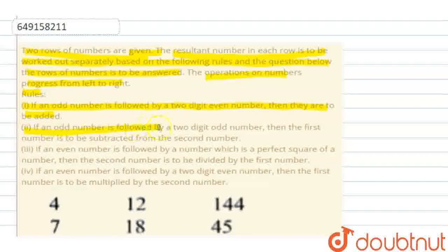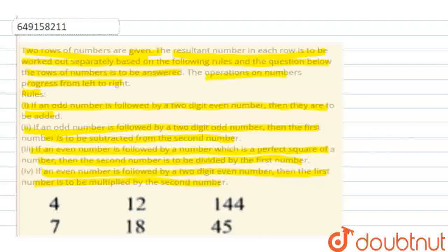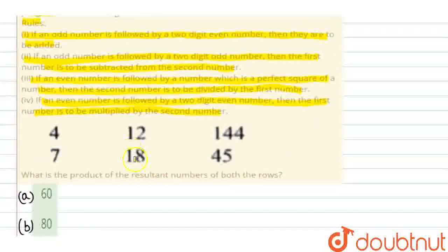If an odd number is followed by a two-digit odd number, then the first number is to be subtracted from the second number. If an even number is followed by a number which is the perfect square, then the second number is to be divided by the first number. If an even number is followed by a two-digit even number, then the first number is to be multiplied by the second number. We have two rows of numbers. What is the product of the resultant number of both rows?